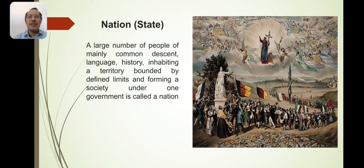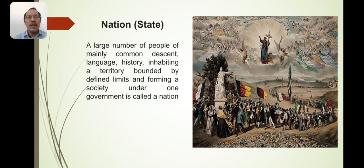Here we see a picture made by Frederic Sorrieu. In this particular picture he is trying to depict many things, and with the help of that we can understand what in 1840, 1848, and so on, the people thought of the nation and how the nation state can evolve.